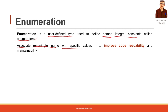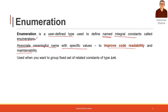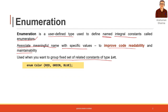You want to associate names to define named integral constants with enumerators, which improves readability and maintainability. For example, a group of fixed related constants of type int can be used with enumerations. For instance, you have red, green, blue — which is RGB representing colors. So color is the user-defined type.